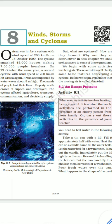This second cyclone was accompanied by water waves about 9 meters high. It caused enormous financial losses. The cyclone affected agriculture, transport, communication and electricity supply. But what are cyclones? How are they formed, and why are they so destructive?